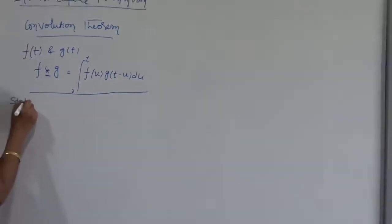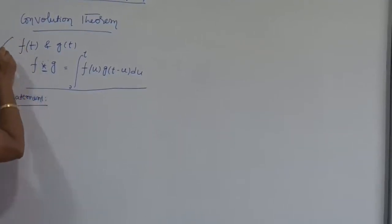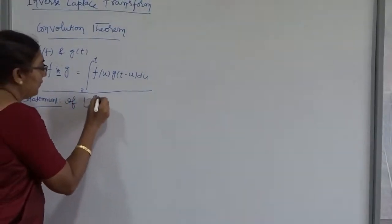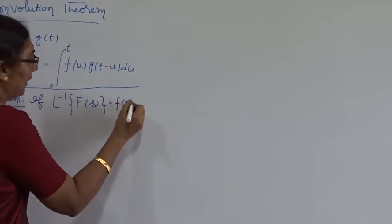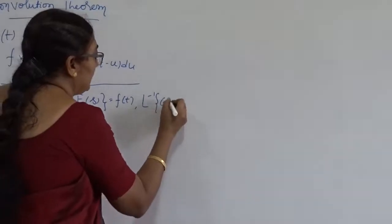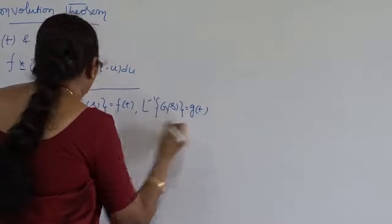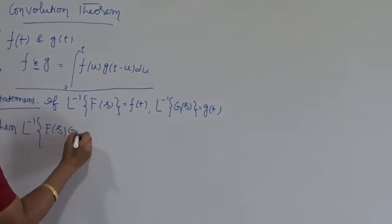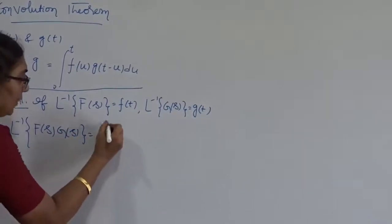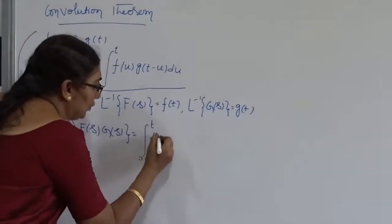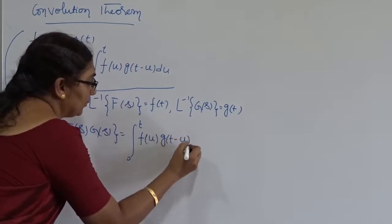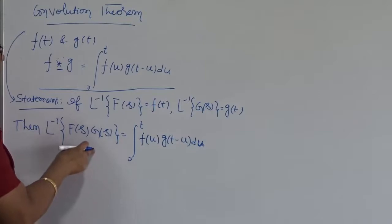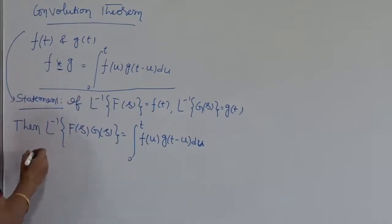Now, the statement of the convolution theorem — I am not going to derive it here, only stating it. If L inverse of F(s) equals f(t), and L inverse of G(s) equals g(t), then L inverse of the product F(s)·G(s) is nothing but the convolution: the integral from 0 to t of f(u) times g(t minus u) with respect to u.